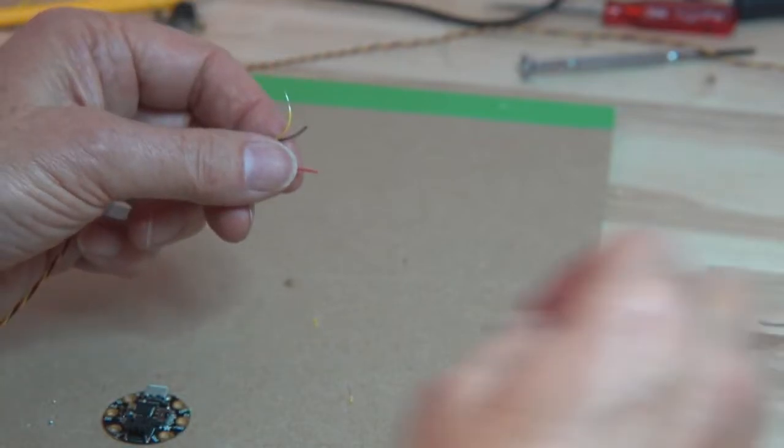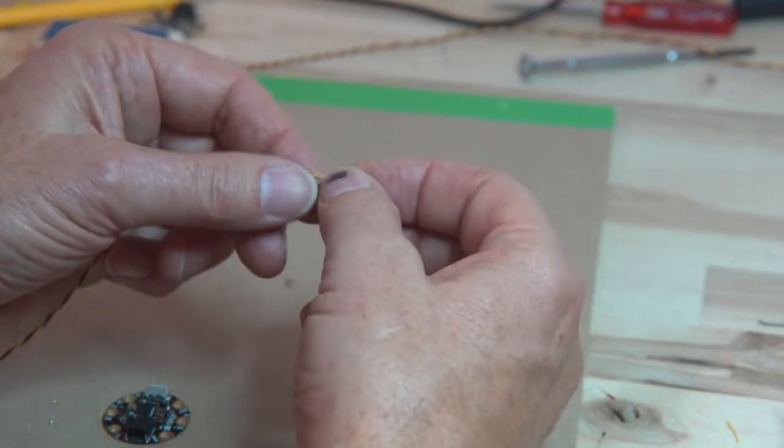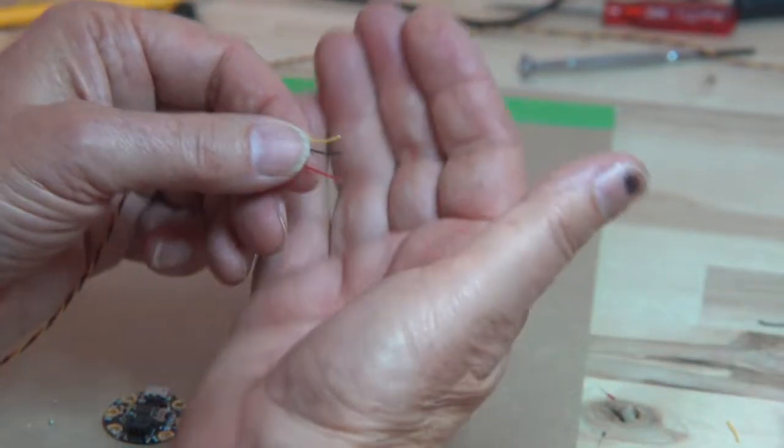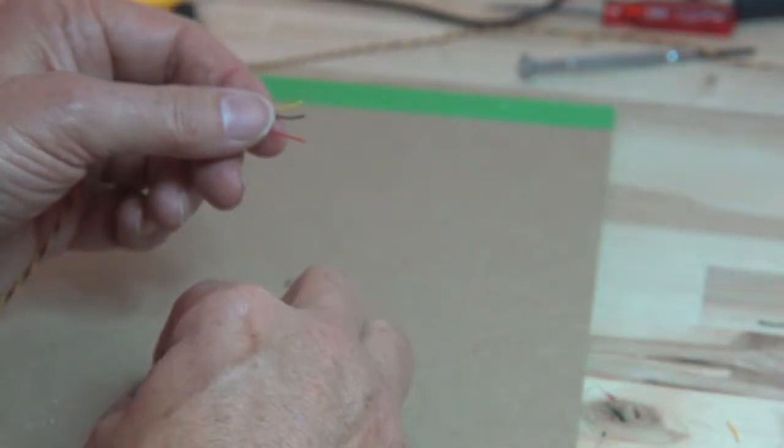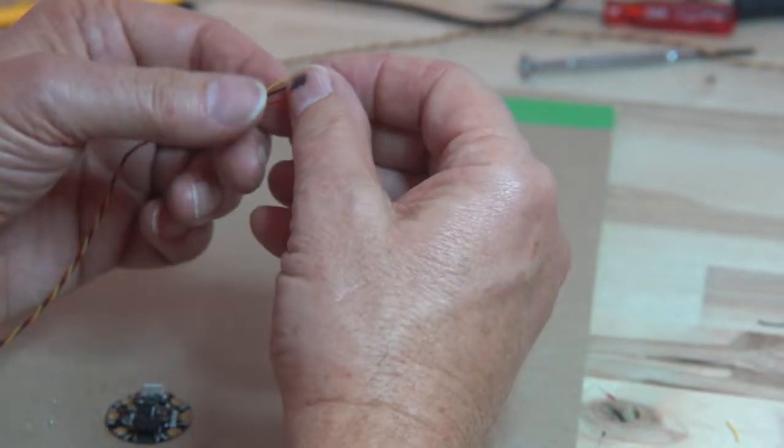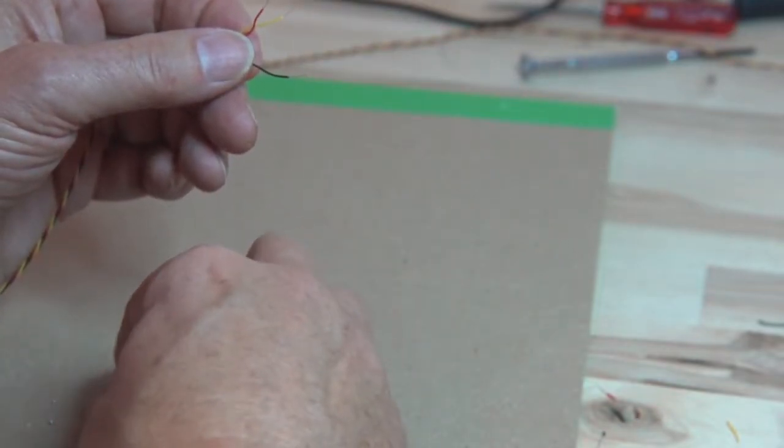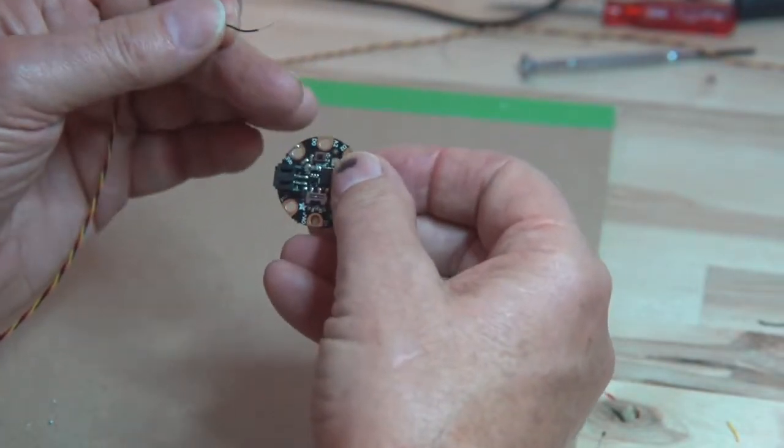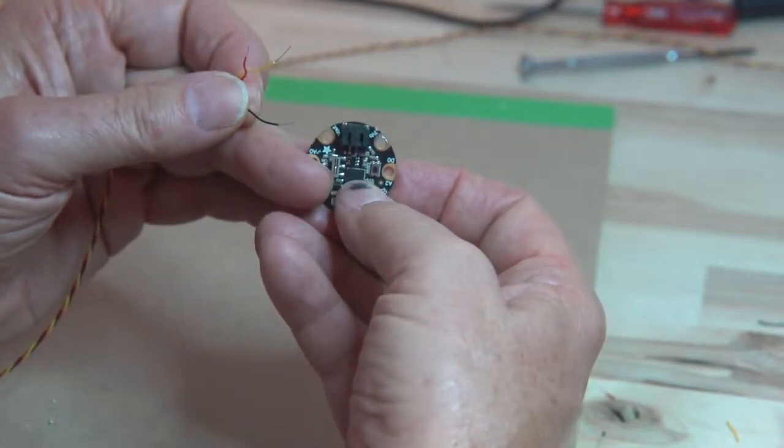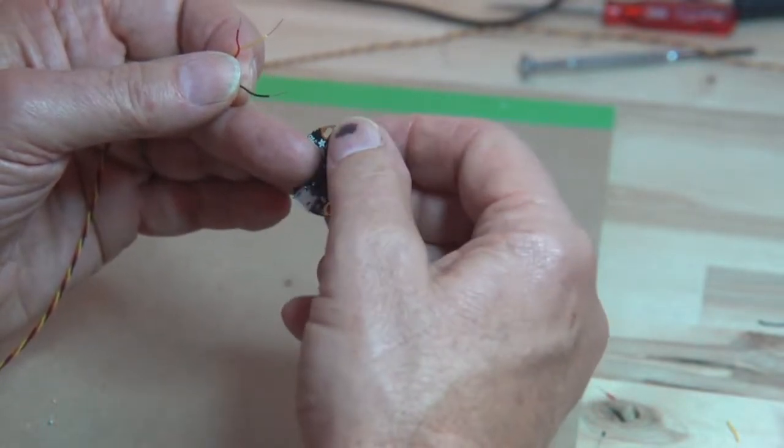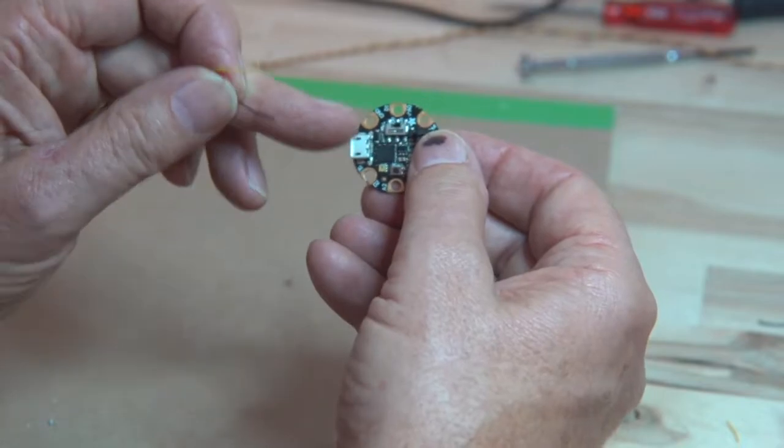So there we have three stripped wires. I don't know how well you can see those in the video, but... And then we just have to connect them to the correct places on the Gemma. The black wire is ground, and it's the easiest because if you look on the Gemma, there is a hole labeled ground. It's this one right here next to the USB.